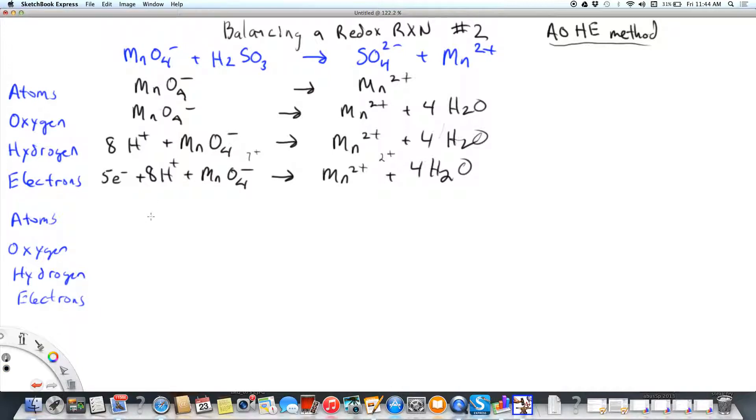So I'm going to have sulfurous acid, which you know is a weak acid. So we're going to write it as molecules. And then on the right is sulfate. We wouldn't write H2SO4 because you know that sulfate is a strong acid. So let's see that sulfur is balanced. We need to balance out oxygen. I have four on the right and three on the left. So I need a water molecule.